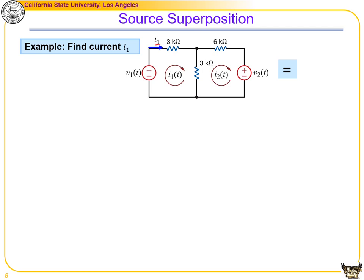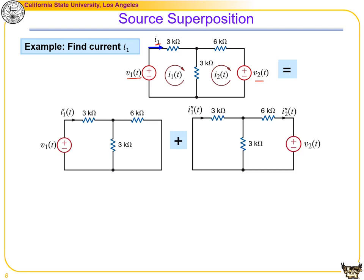To find current i1, where the circuit has two power supplies V1 and V2: i1 results from both sources. Using source superposition, decompose the circuit into two parts — one driven by V1 and the other by V2. In the first circuit, set V2 to zero by replacing it with a wire. In the second circuit, set V1 to zero by replacing it with a wire.